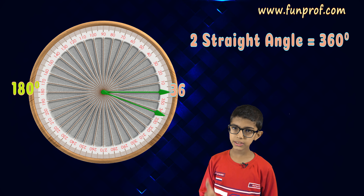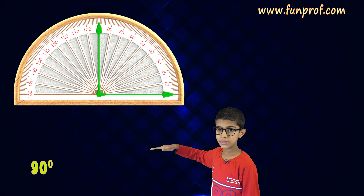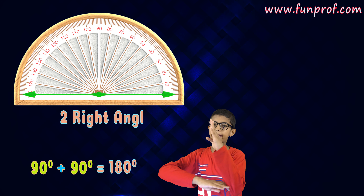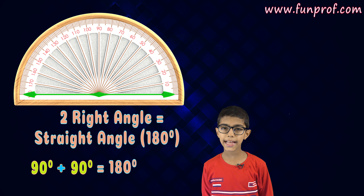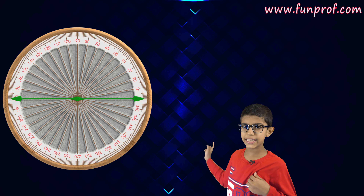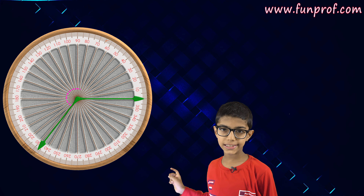Straight angle — simple. Here is a line and here is a dot, here is a straight angle. Two straight angles are equal to 360 degrees, because 180 plus 180 is 360. And 90 plus 90 is 180, so two right angles are equal to a straight angle.